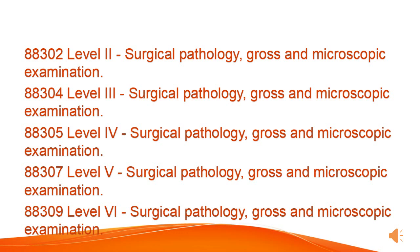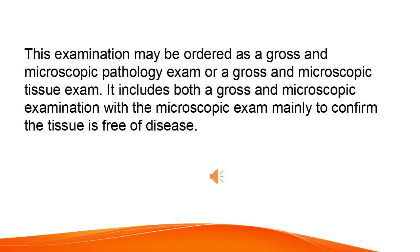Level II, Surgical Pathology, Gross and Microscopic Examination. 88,304 Level III, Surgical Pathology, Gross and Microscopic Examination. 88,305 Level IV, Surgical Pathology, Gross and Microscopic Examination. 88,307 Level V, Surgical Pathology, Gross and Microscopic Examination. 88,309 Level VI, Surgical Pathology, Gross and Microscopic Examination. This examination may be ordered as a gross and microscopic pathology exam or a gross and microscopic tissue exam. It includes both a gross and microscopic examination, with the microscopic exam mainly to confirm the tissue is free of disease.